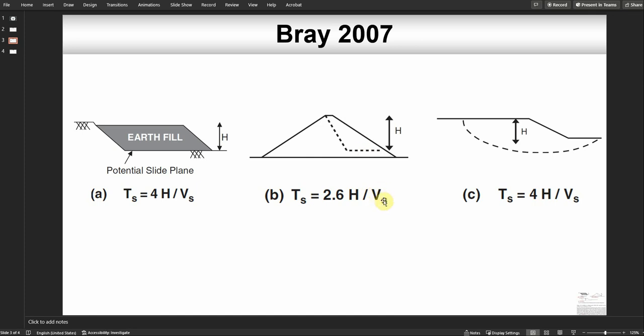The third option is if you have a slip surface that looks like a circular slip surface, you can estimate it using 4h divided by vs. H in this case is the distance from the crest to the edge of the slope.